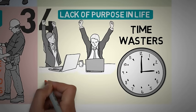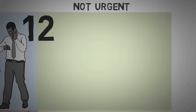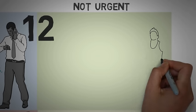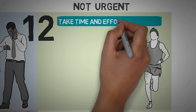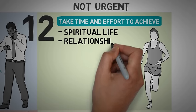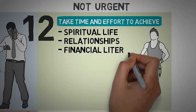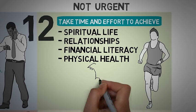Quadrant two activities are the ones you want to spend your time with. They are important but not urgent. They are directly related with the things you want the most in life and that usually take time to achieve. It deals with things like your spiritual life, building relationships, becoming financially literate, your physical health, and other long-range planning. The fact that they are not urgent is one of the things that makes us procrastinate on these things even knowing we need to do them.